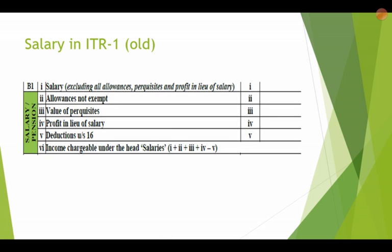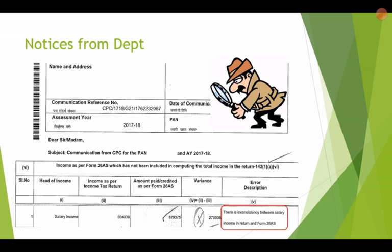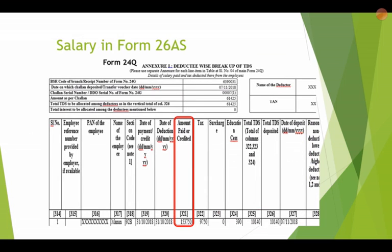In the old ITRs, only very limited salary information was given — value of perquisites, profit in lieu of salary, allowances not exempt, and the rest in the salary column, then deductions under Section 16. Very limited disclosure. Because of this, there were notices from the department citing inconsistency between the salary in the return and in Form 26AS.